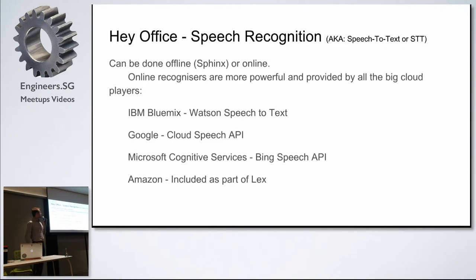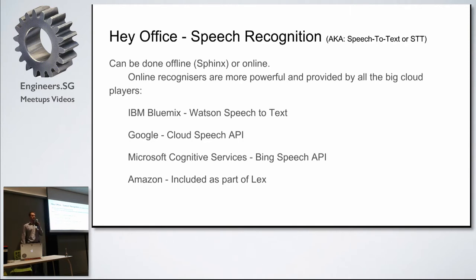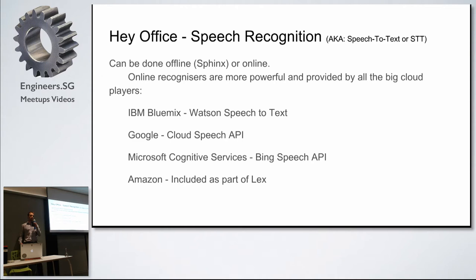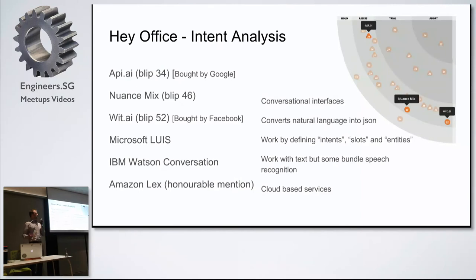Following hot word detection, you need speech recognition. You can go offline or online. The offline tool is Sphinx, but we found that online speech recognizers are vastly superior. The most popular ones are IBM Watson, Google Cloud Speech, and Microsoft Bing Speech. Amazon also has a speech recognizer, but you can only use it if you're also using Lex at the same time — which, strangely enough, is actually what we're doing.